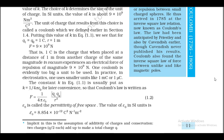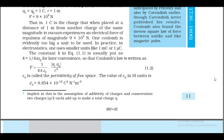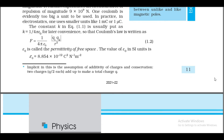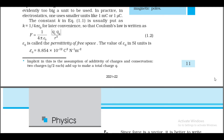The constant k in Coulomb's law is usually written as k = 1/(4πε₀) for later convenience, so that Coulomb's law is written as F = (1/4πε₀)·q1·q2/r². Here ε₀ is called the permittivity of free space. The value of ε₀ in SI units is ε₀ = 8.854 × 10⁻¹² C²·N⁻¹·m⁻².